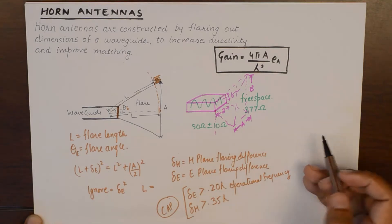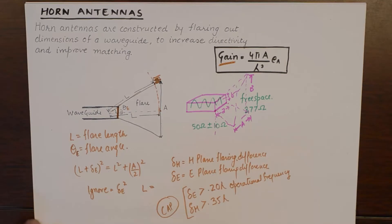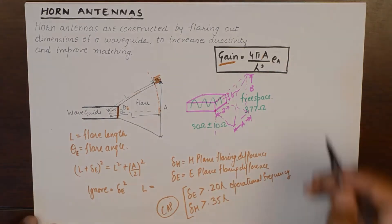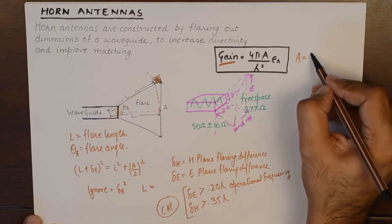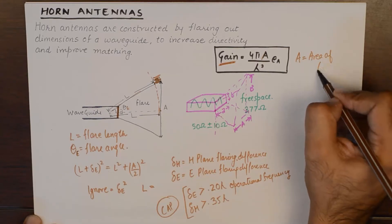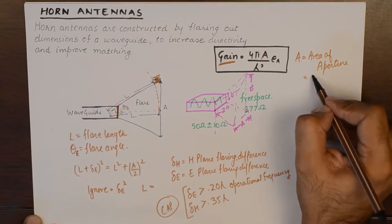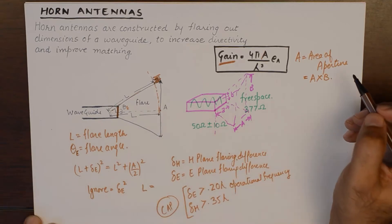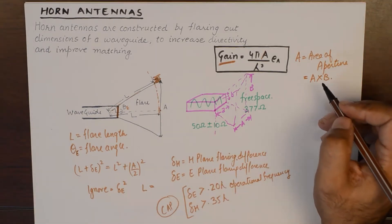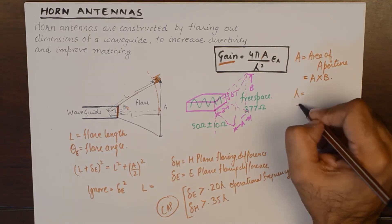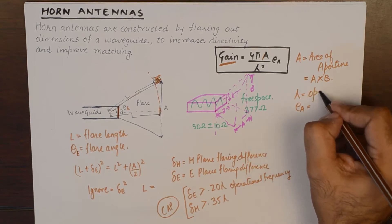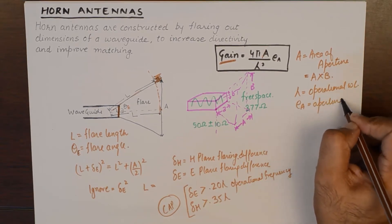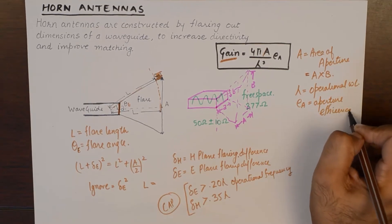And, now the most important formula is the gain of the horn antenna. The gain of the horn antenna is 4 pi A upon lambda square into E A. Now, A is area of aperture which is capital A into B. This will be a rectangular thing in most of the cases. And, lambda is operational wavelength. E A is aperture efficiency.